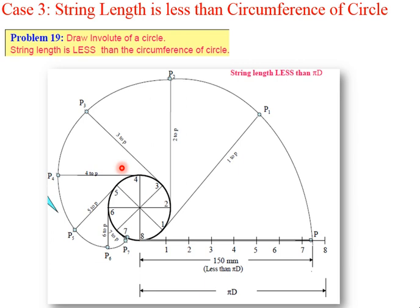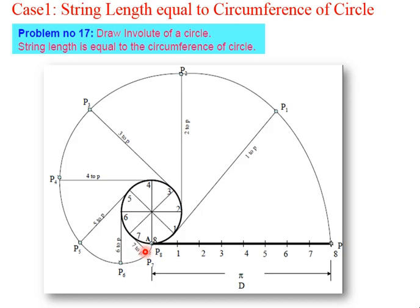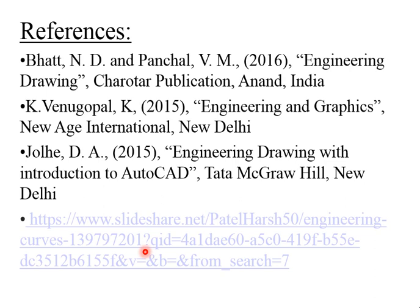The involute of a circle is a very important engineering curve. Its main application is in generating involute gear tooth profiles. Remember all three cases: string length equal to, more than, and less than the circumference of the circle. These four slides cover how to draw this engineering curve. References include a slideshare presentation by Harsh Patel, from which the figures shown here are taken. Thank you very much.